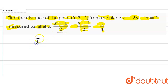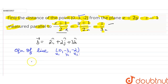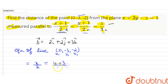Let vector b show the direction cosines of this line. It is 2i-cap + 2j-cap + 3k-cap. From this line we can see the direction ratios L, M, N. Now, the equation of the line from point (0, -3, -2) — this is our (x1, y1, z1) — since the two lines are parallel, L, M, N are equal. So it is x/2 = (y+3)/2 = (z+2)/3.